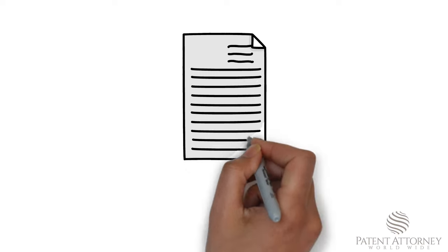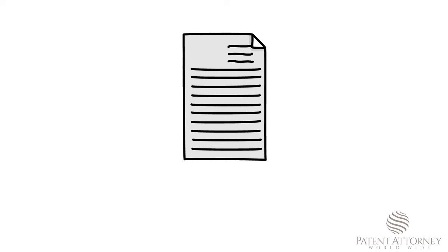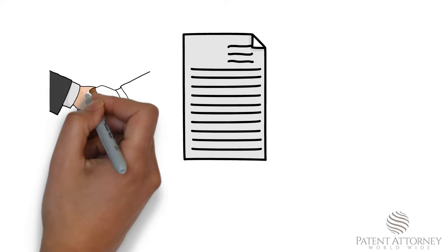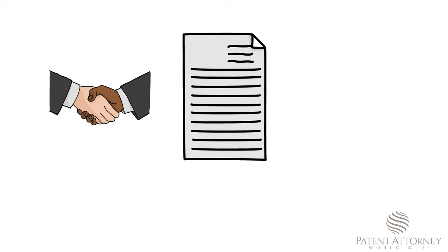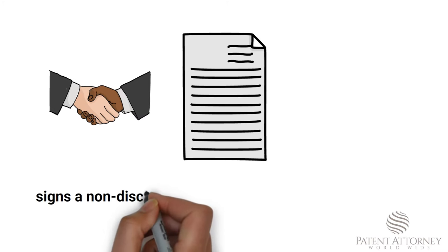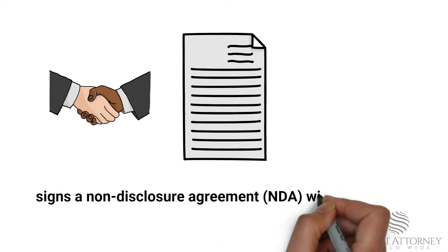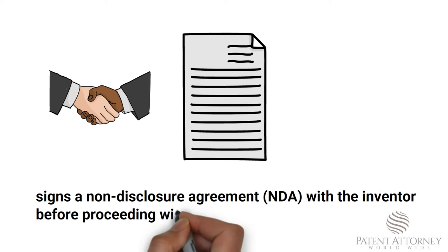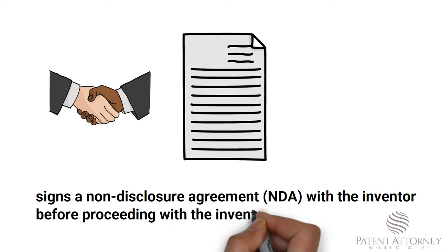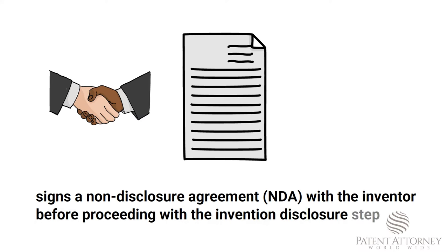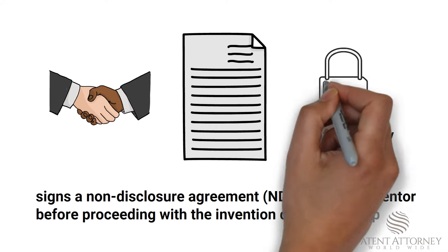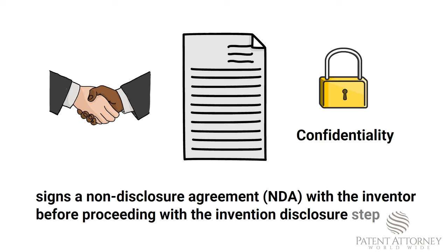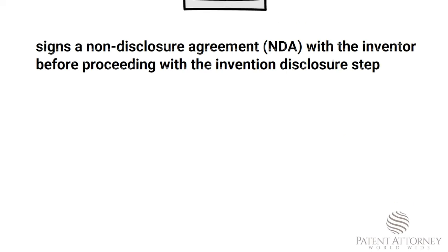It is important to note that since a patent attorney or intellectual property firm signs a non-disclosure agreement — that is, an NDA — with the inventor before proceeding with the invention disclosure step, your confidentiality would be maintained by the patent attorney at all levels. Hence, you need not worry about the privacy of your invention.